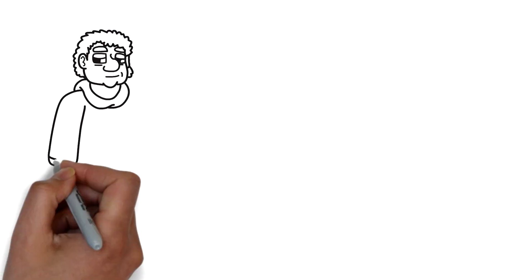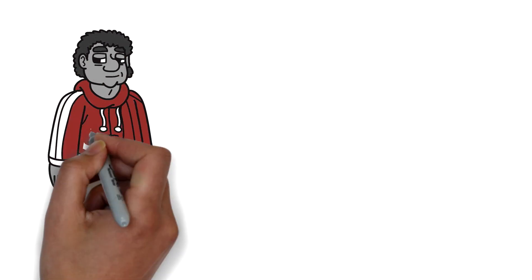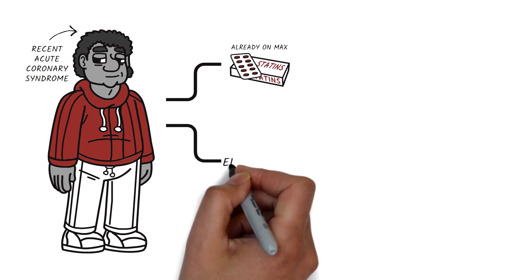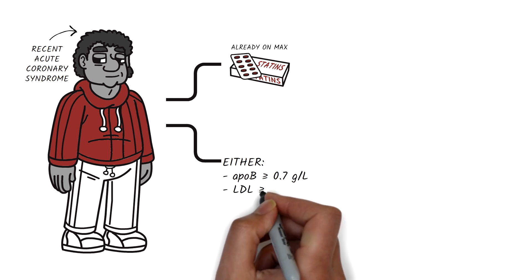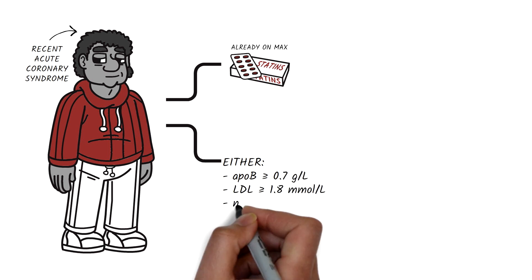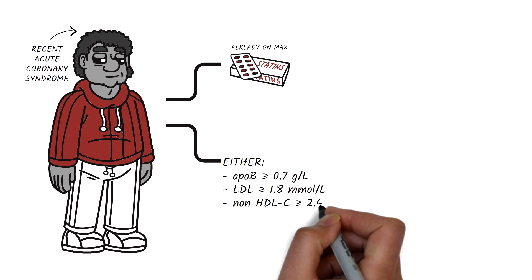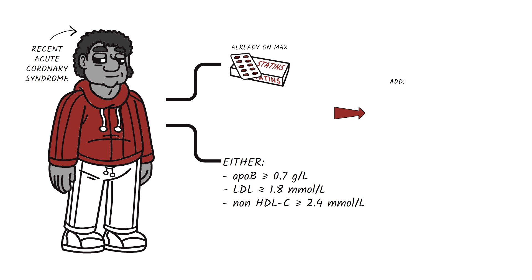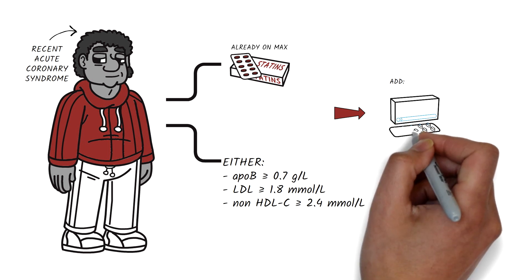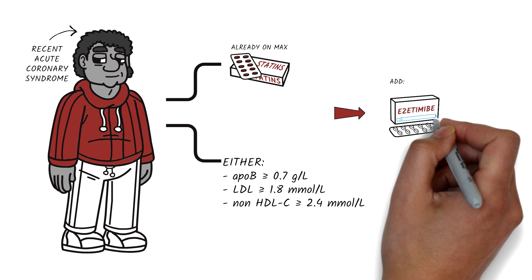Based on the IMPROVE-IT trial, a patient who has had a recent acute coronary syndrome, is already on maximally tolerated doses of statins, and has an ApoB greater than or equal to 0.7 grams per liter, or an LDL greater than or equal to 1.8 millimole per liter, or a non-HDL-C greater than or equal to 2.4 millimole per liter, would benefit from intensified lipid lowering therapy through the addition of ezetimibe in combination with a statin.